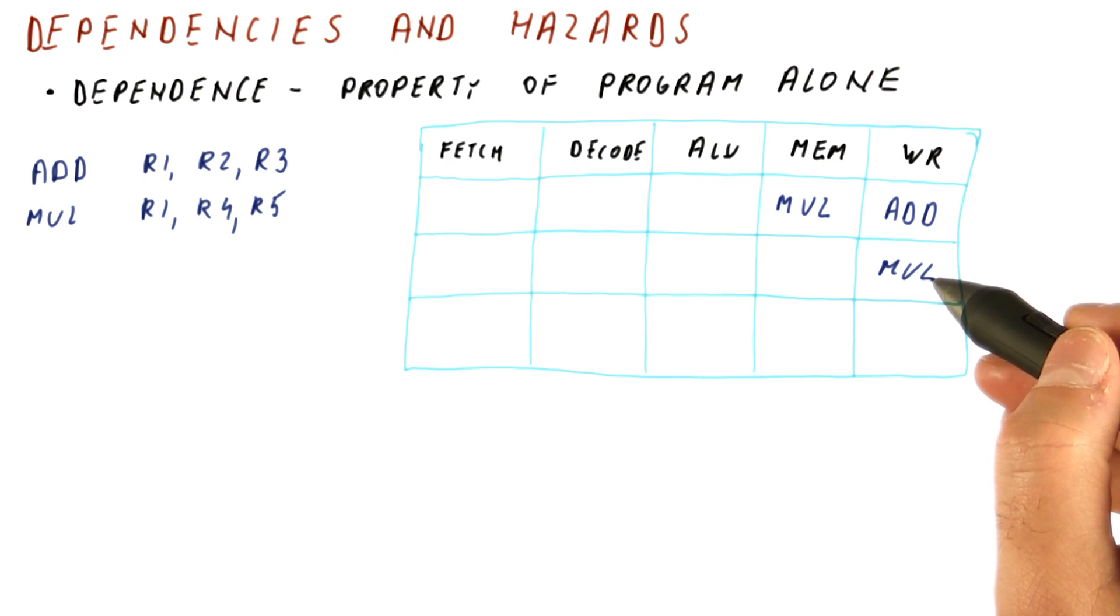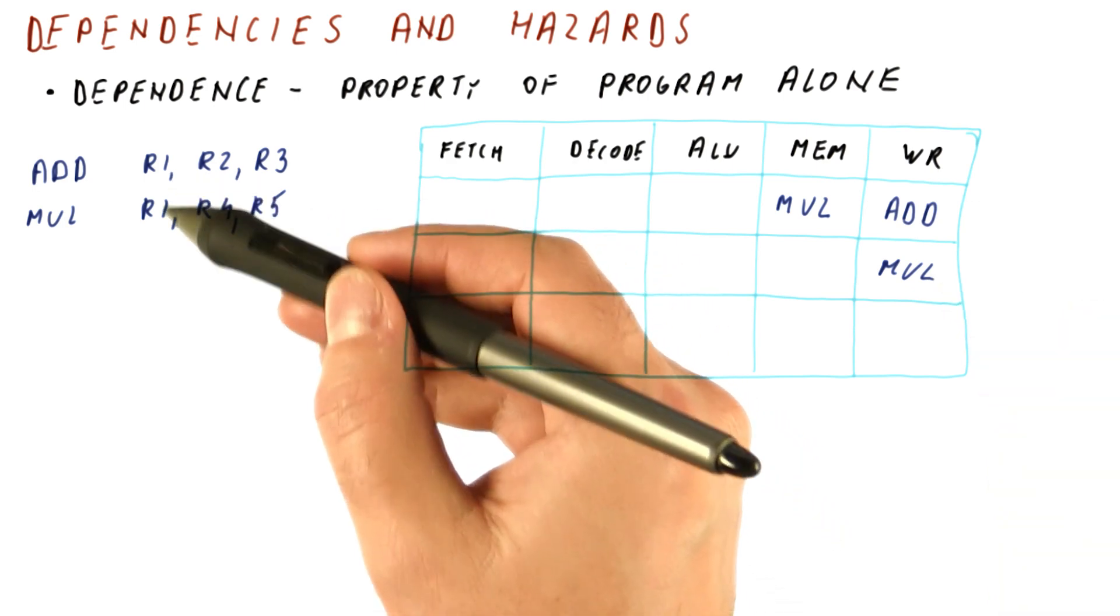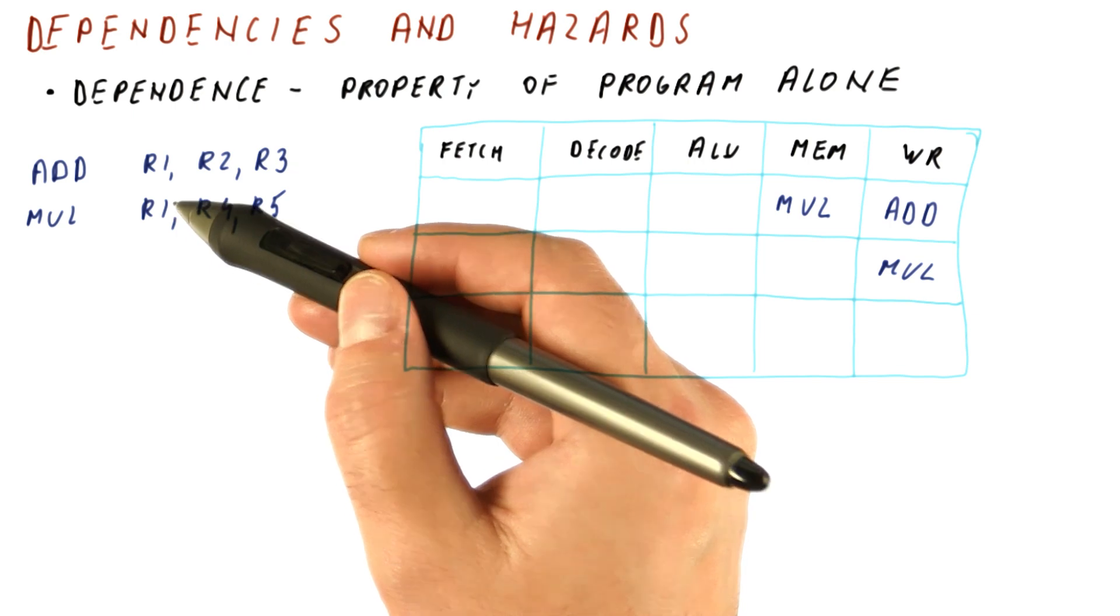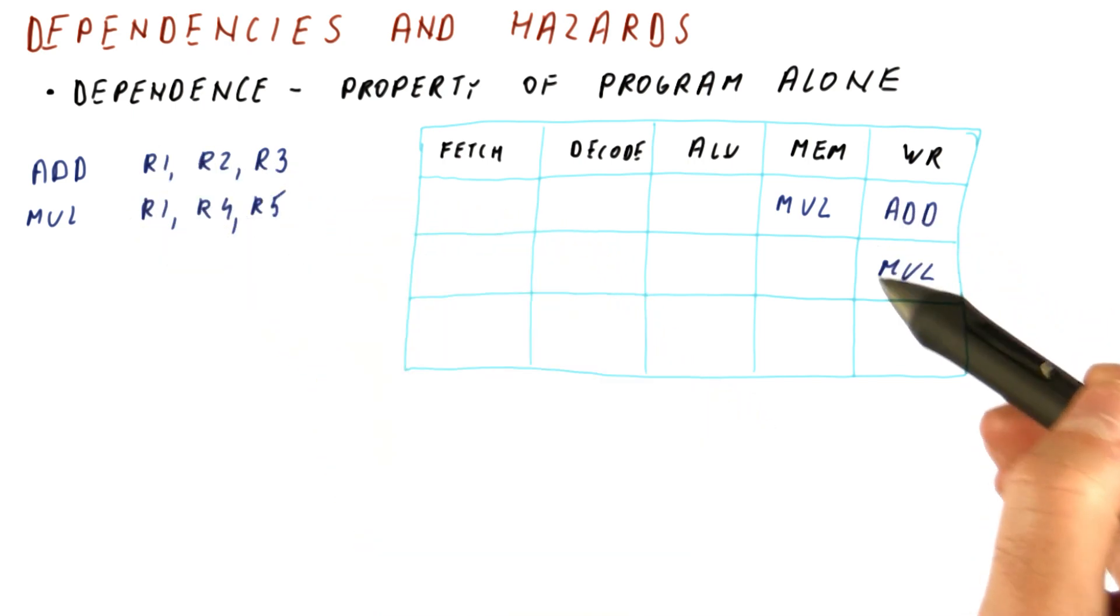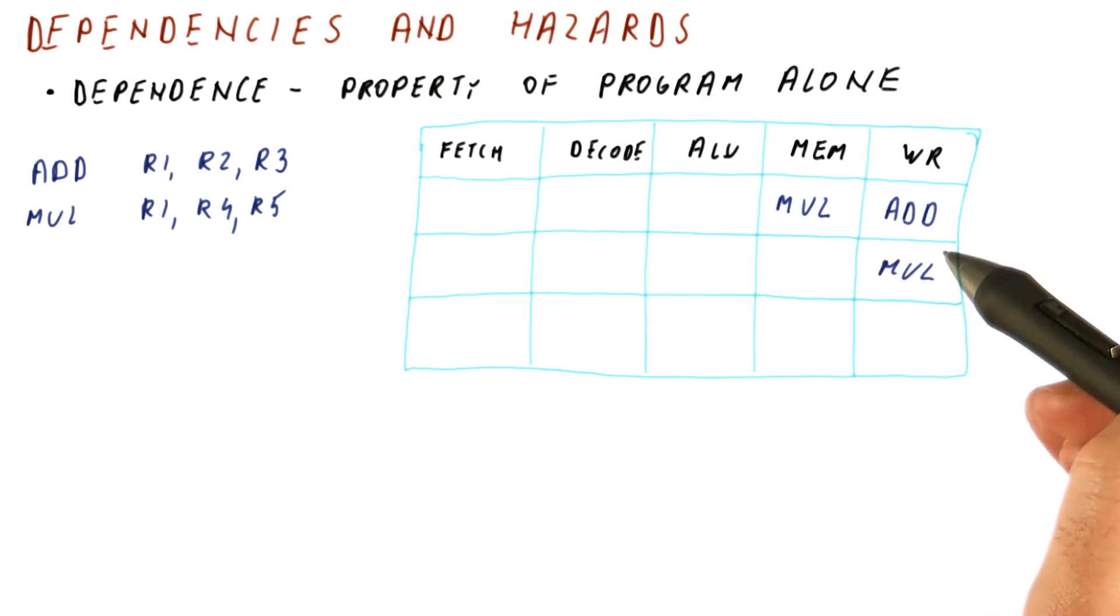So as you can see, these instructions always write to R1 in the correct order. So the fact that there is this output dependence doesn't mean that we have to worry about it in this pipeline.